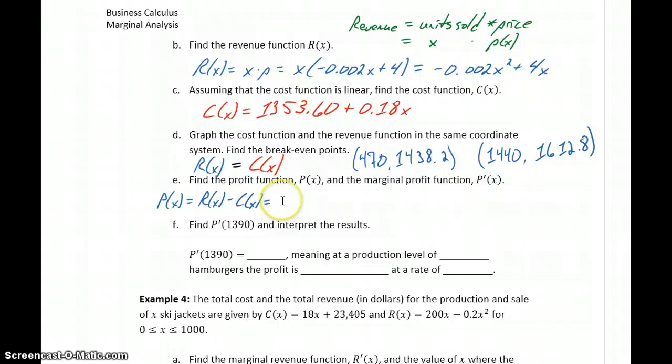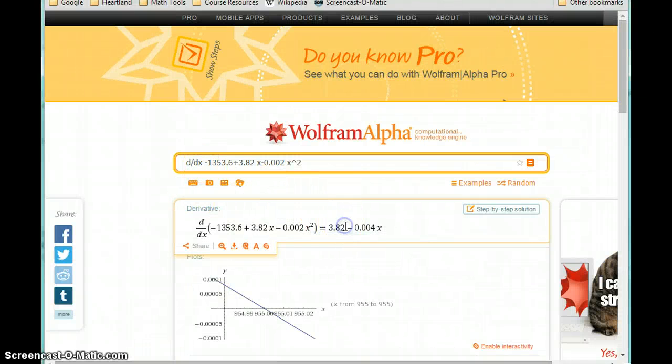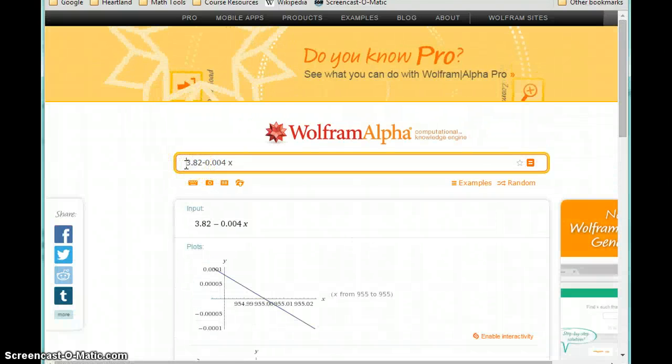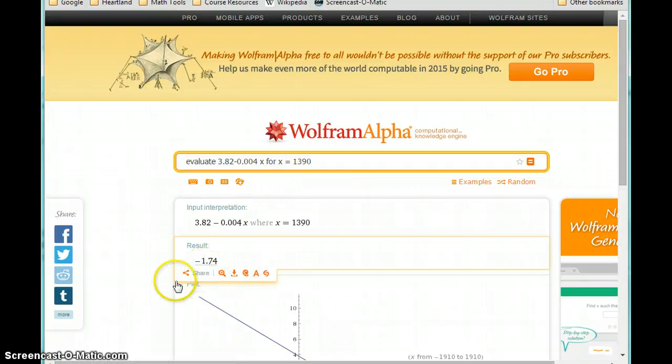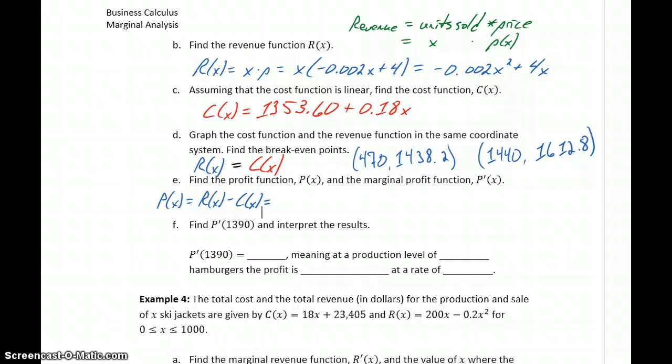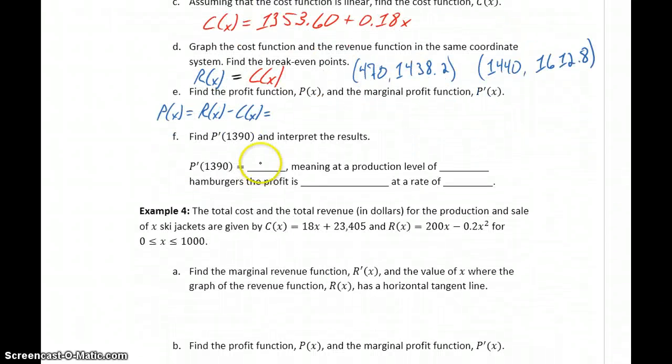So we could come up with the profit and marginal profit function. Then we want to evaluate the marginal profit at 1,390, and we get a result of negative 1.74. And now we want to provide an interpretation for that result. So at a production level of 1,390, our marginal profit is negative 1.74, meaning that at a production level of 1,390 units, or in this case hamburgers, the profit is decreasing since that rate of change is negative, and it's decreasing at a rate of $1.74 per hamburger.